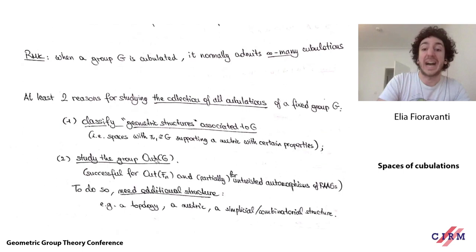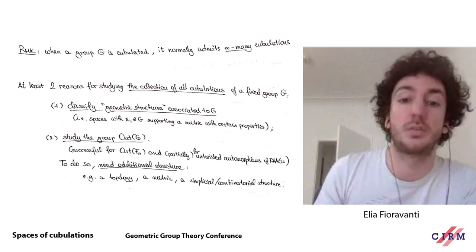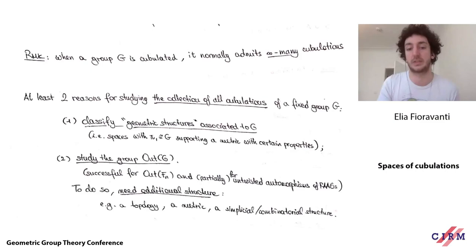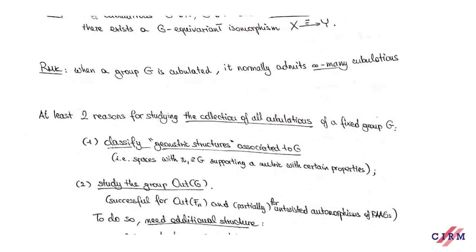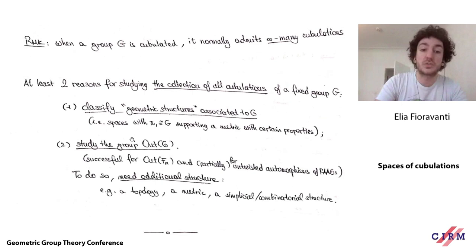Why does Out(G) act on the set of cubulations of G? Whenever you have a cubulation of G and an automorphism of G, you can twist your action by the automorphism: rather than letting group elements act on the metric space directly, you first apply the automorphism and then let the result act. This is a priori a new action. If you twist by an inner automorphism, by definition the cubulation doesn't change — the inner automorphism is conjugation by a group element, providing exactly the equivariant isomorphism needed. But twisting by an outer automorphism generally changes the cubulation, giving an action of Out(G) on the set of cubulations.